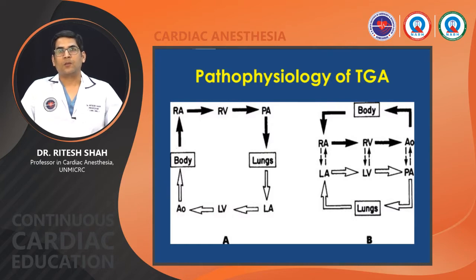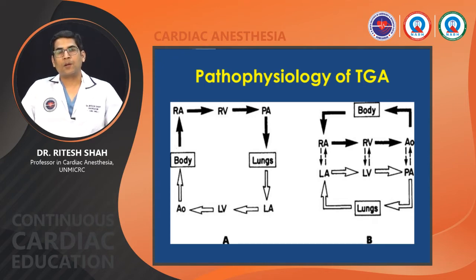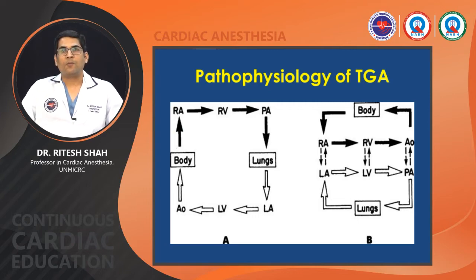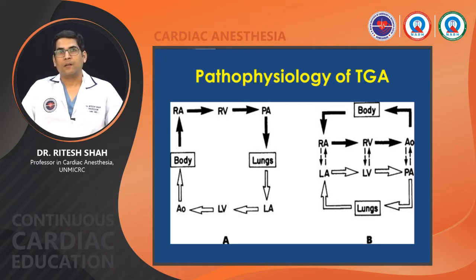In pathophysiology, there are two parallel circuits in TGA, unlike the series circulation in normal. Oxygenated blood from pulmonary veins recirculates from the left atrium to left ventricle to pulmonary artery, and deoxygenated systemic venous blood recirculates through the right atrium to right ventricle to aorta. Therefore, after birth, survival is only possible if there is mixing between the two circulations. The net volume of blood passing from one circulation to the other must remain equal over a short period, otherwise one circuit becomes volume overloaded while the other becomes depleted.